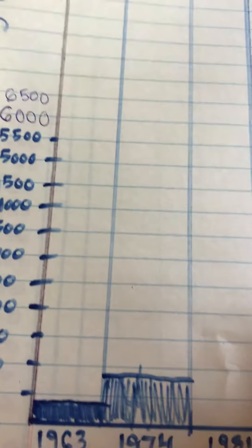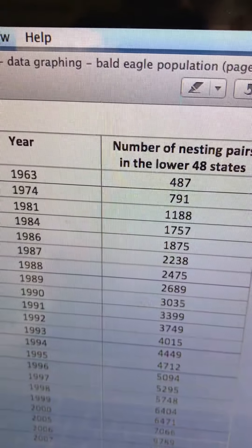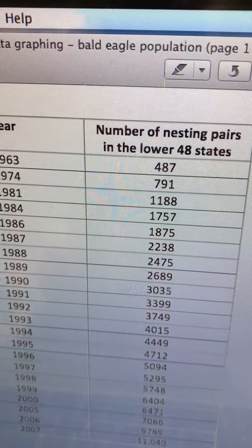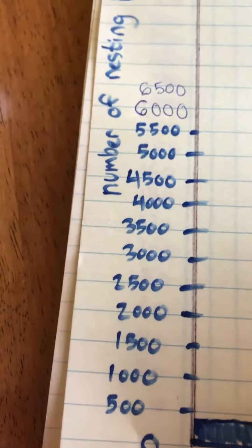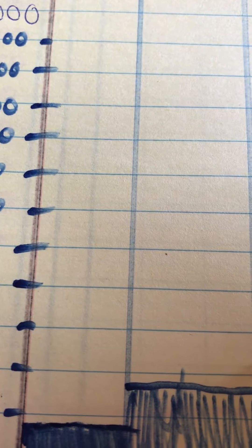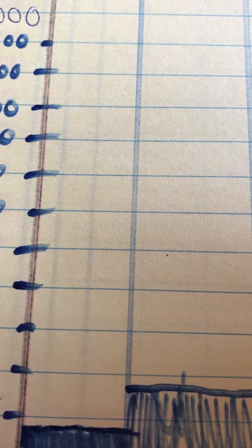Okay, we'll do one more on this graph. 1981. So for 1981, there was 1,188. Pretty close to 1,200. So for 1981, it doesn't go to 1,500, but it's more than 1,000. So I'm going to put my line about here and color that in.